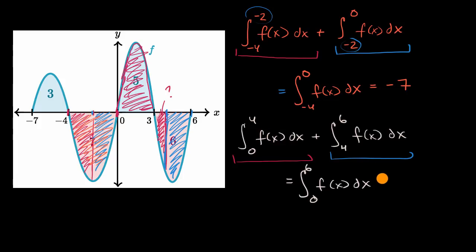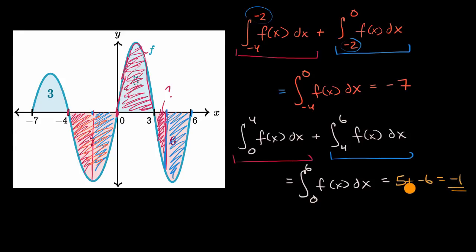What is this going to be equal to? We have this area here, which is five. Then we have this area, which is six — that was given to us. But since it's below the x-axis and above our curve, when we evaluate it as a definite integral it gives negative six. So this is going to be five plus negative six, which equals negative one. And we're done.